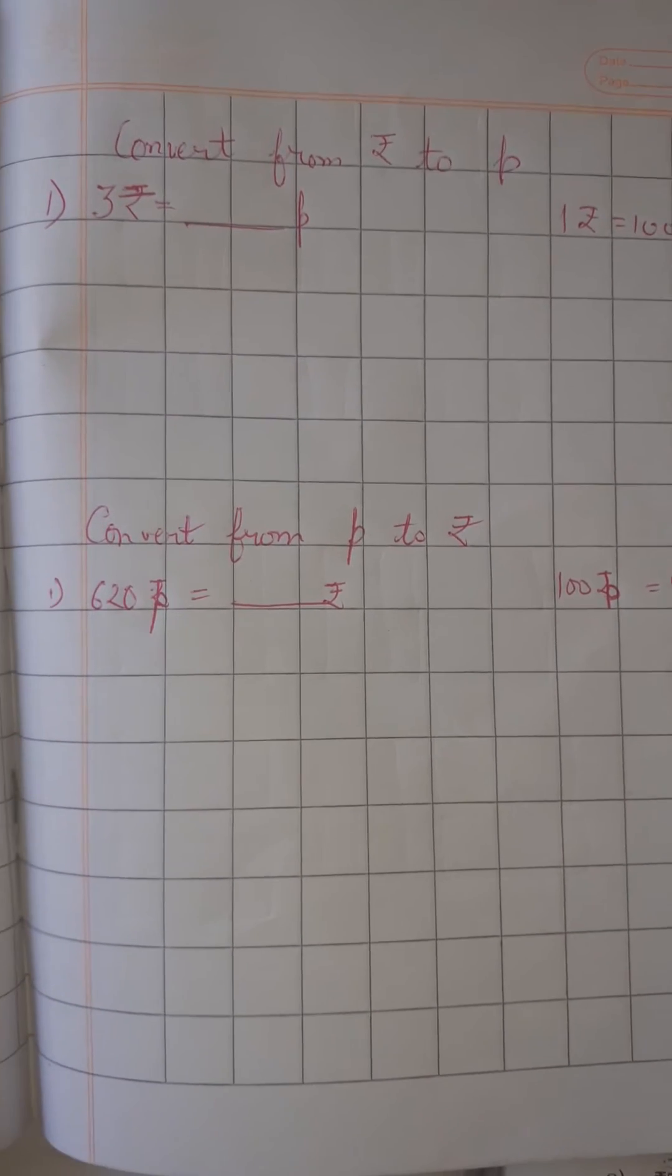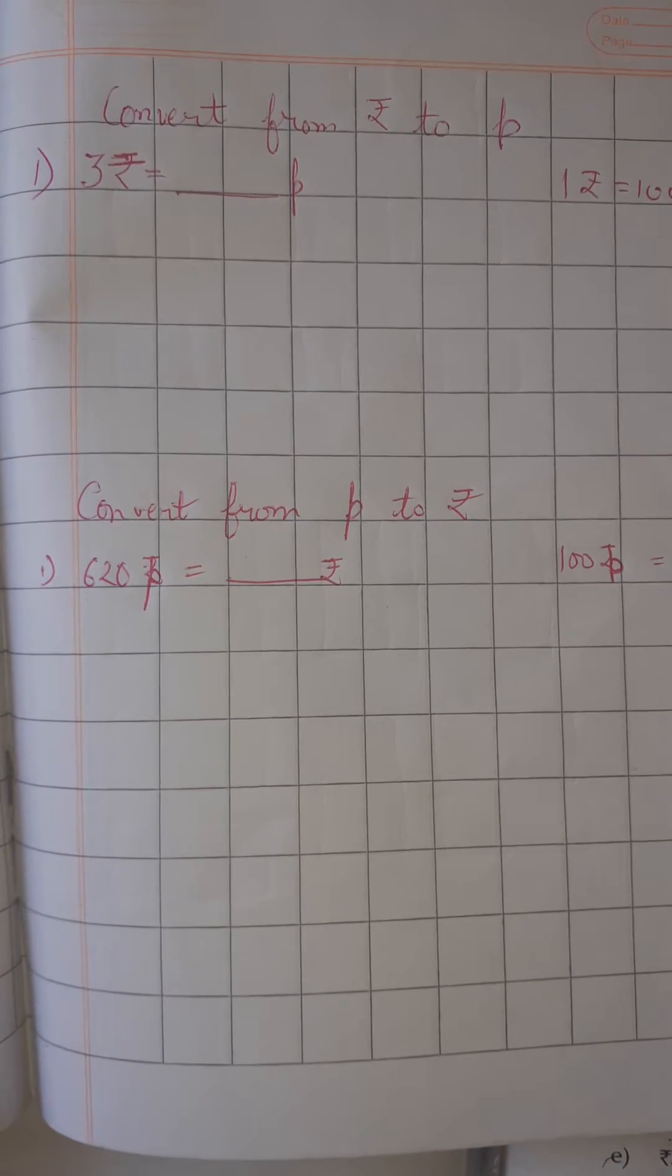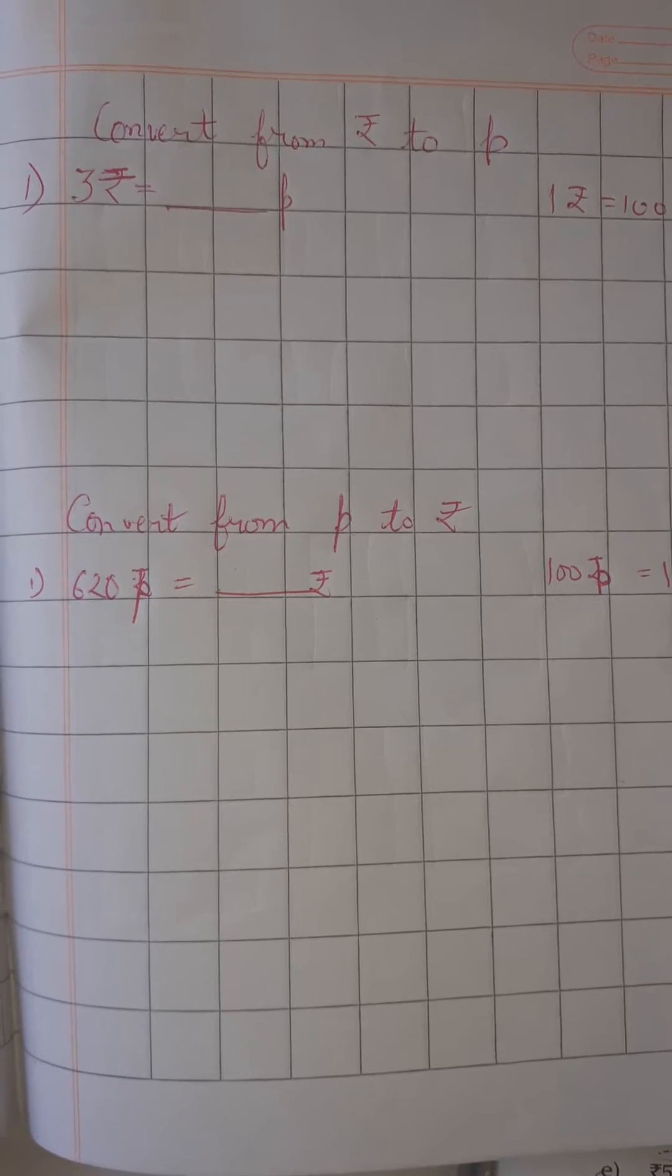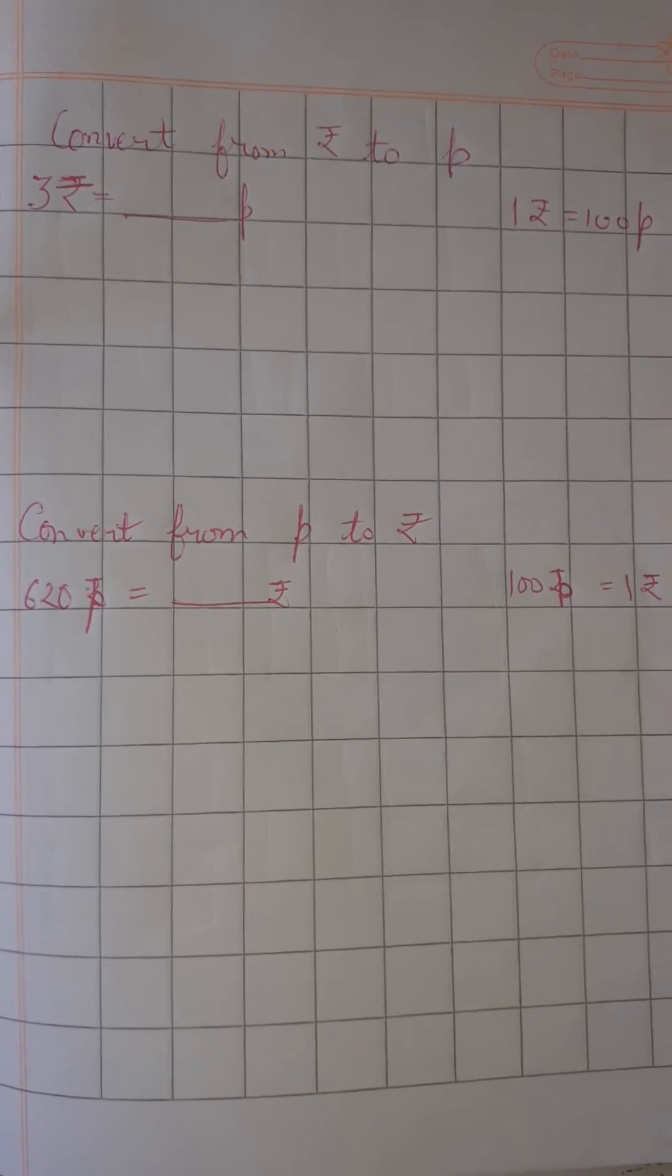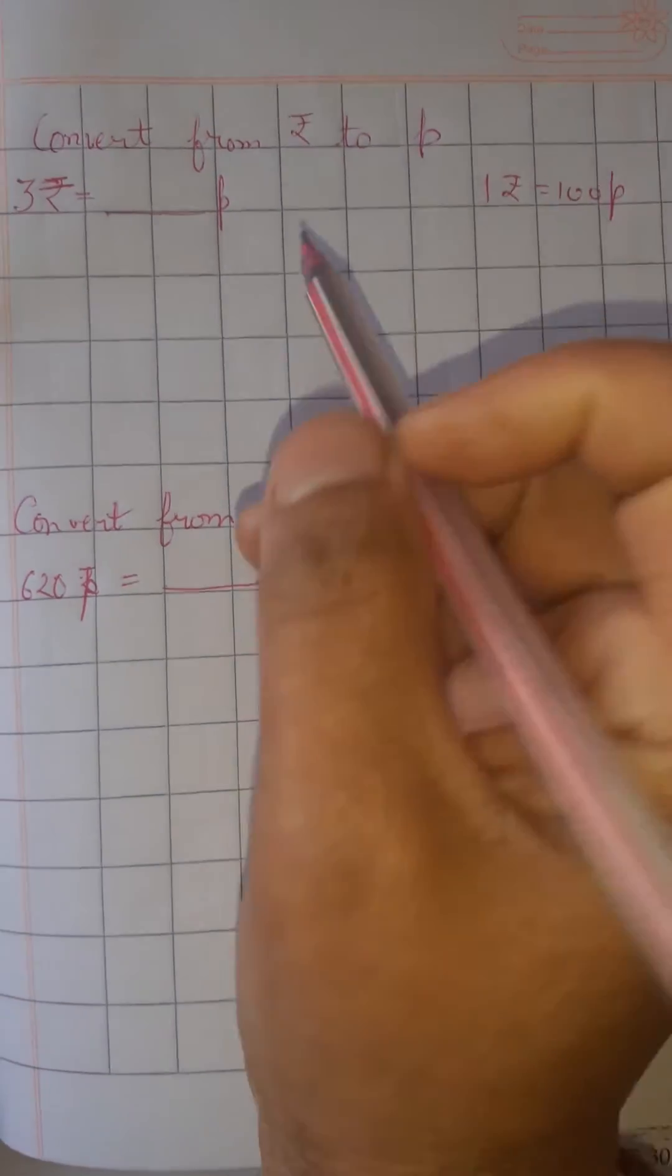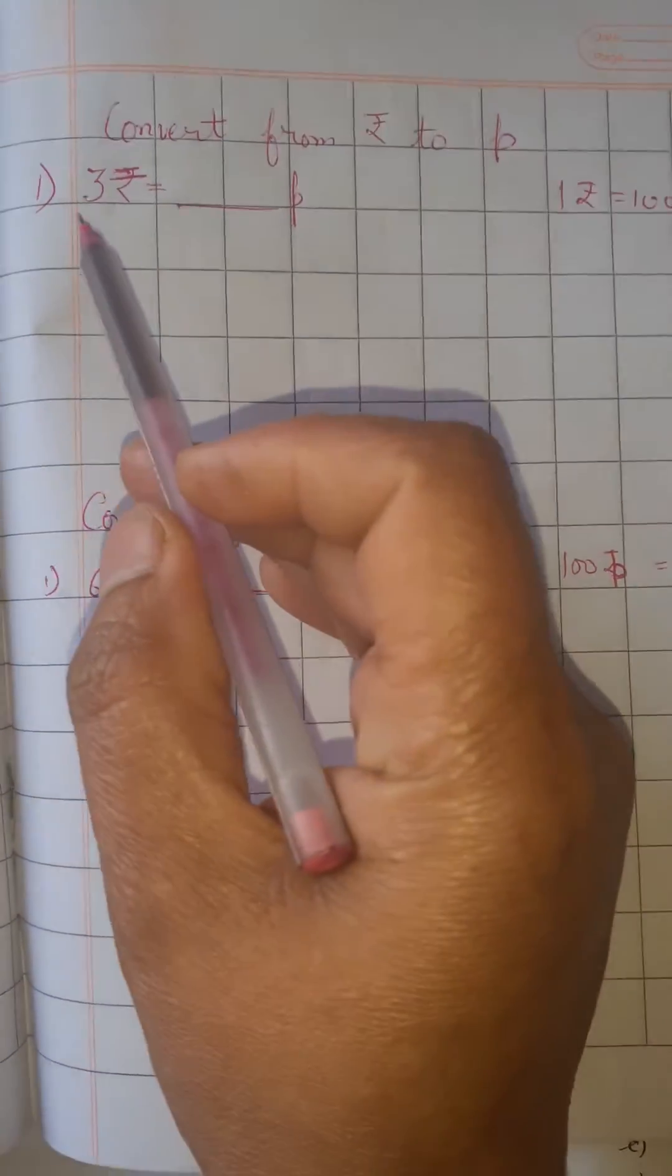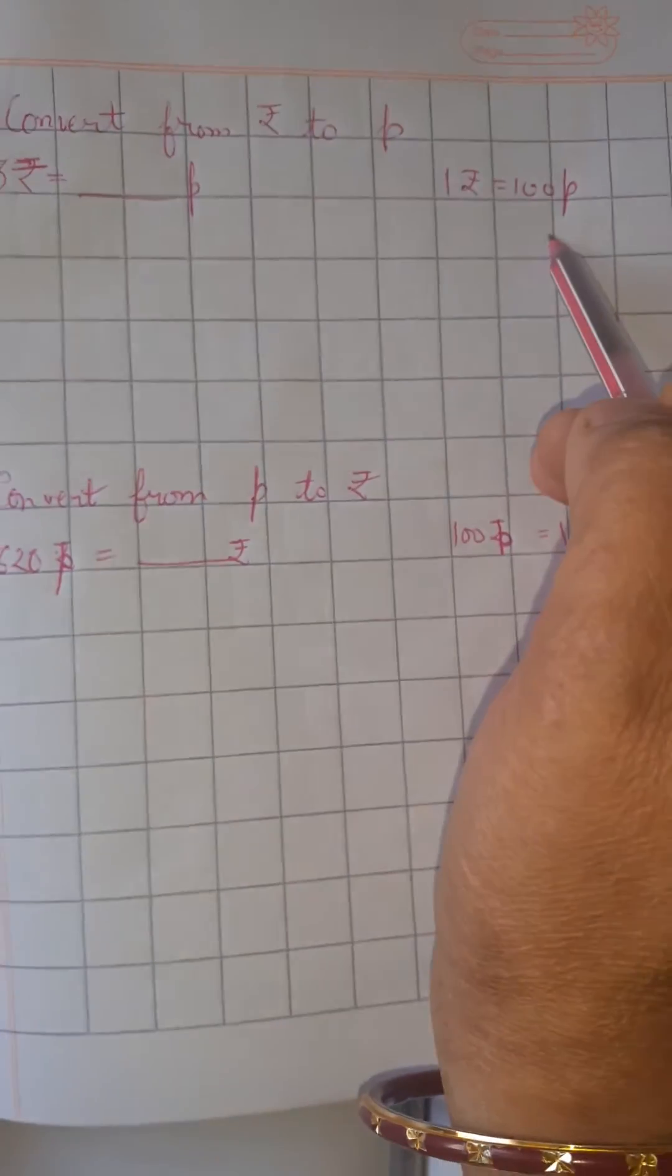Very good morning to class 3. Today our topic is conversion. Conversion means how you can convert things. The first is how you can convert from rupees to paisa. This is 3 rupees. This is the formula which you already know.